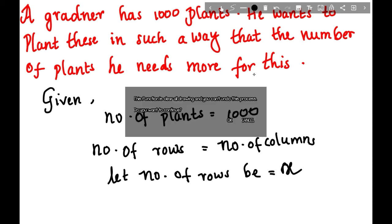For now he has a thousand plants. So let us keep x squared equals a thousand. Then x will be square root of a thousand because the opposite of square is square root. Now let us find the square root of a thousand.